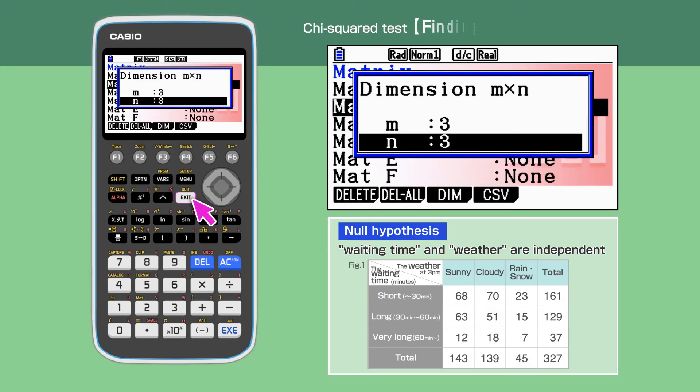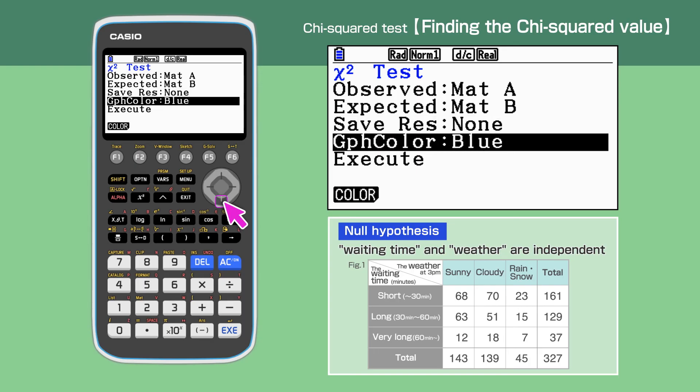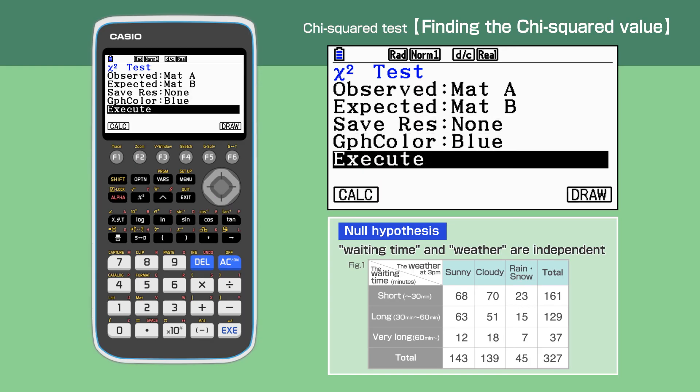Press Exit, then Exit to go back to the original Chi-Squared test screen. Then highlight Execute to work out the Chi-Squared value. Press F1 to calculate.